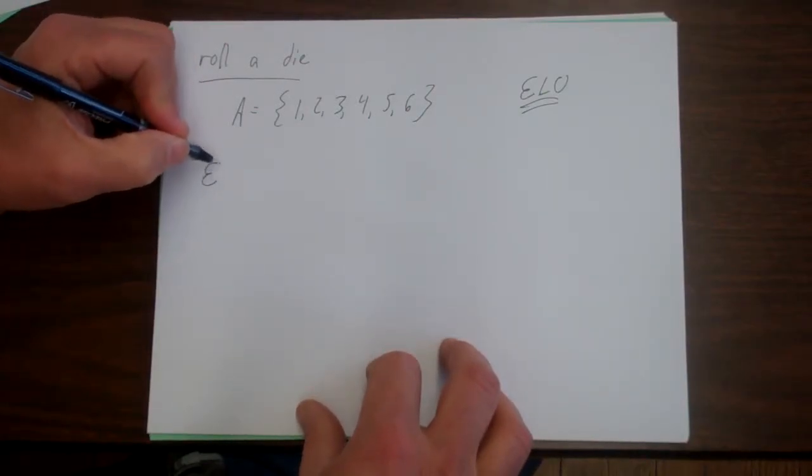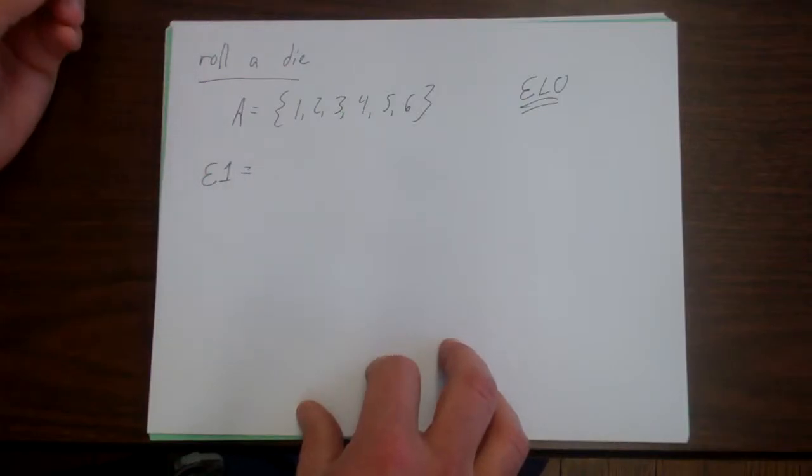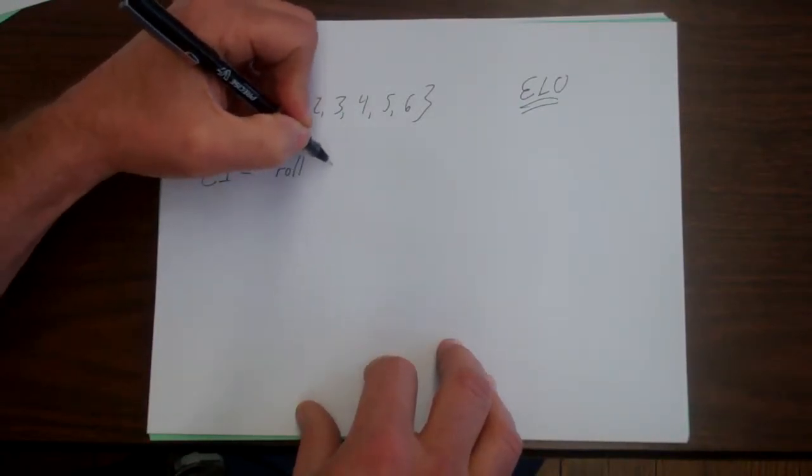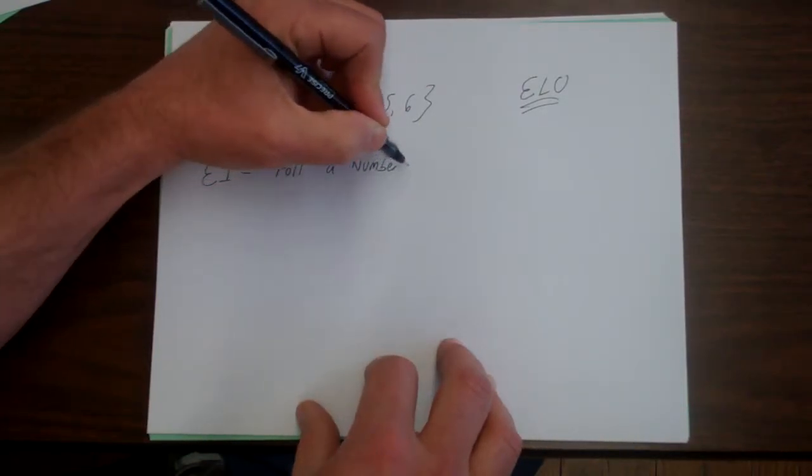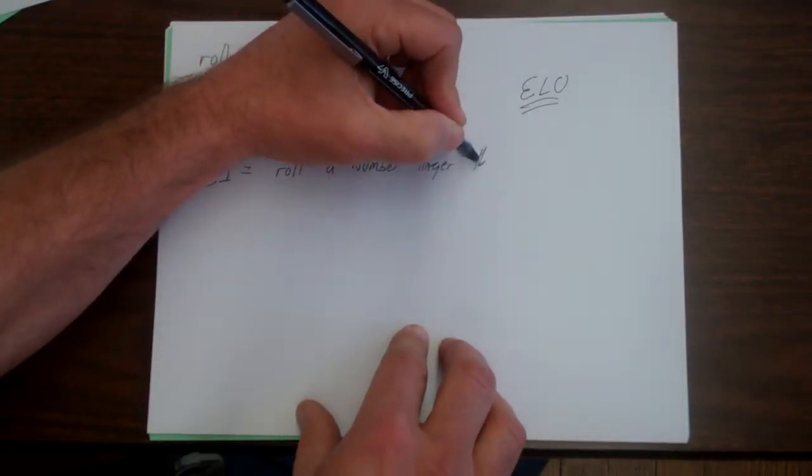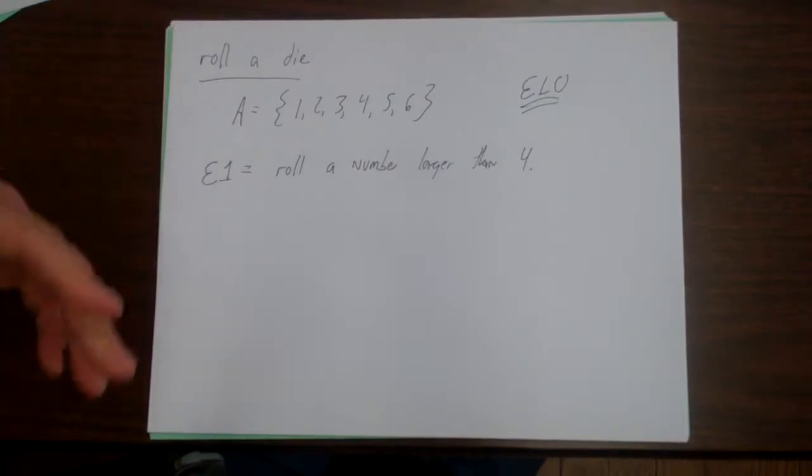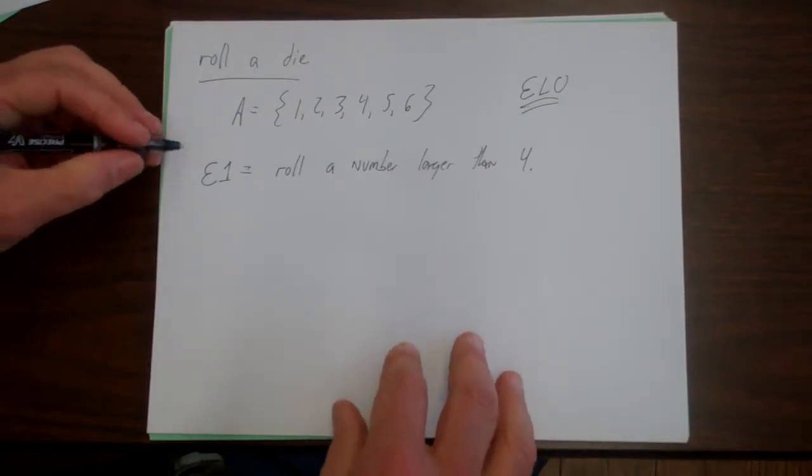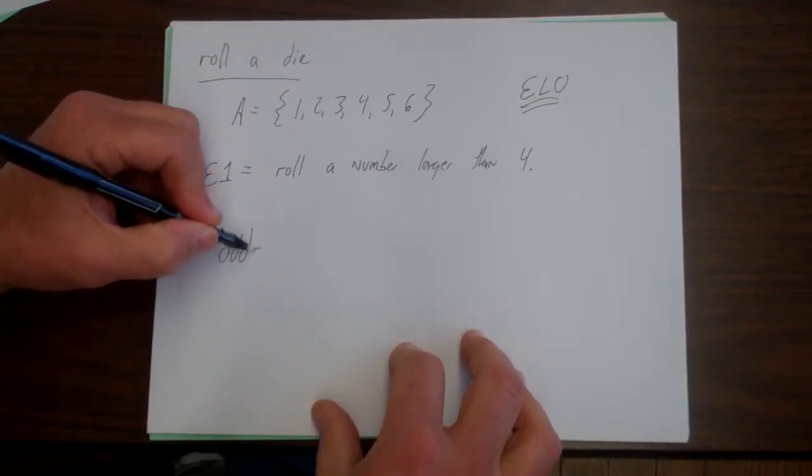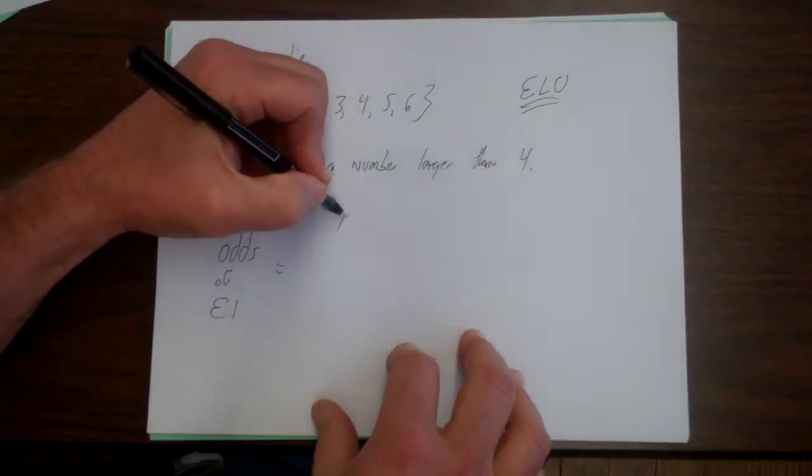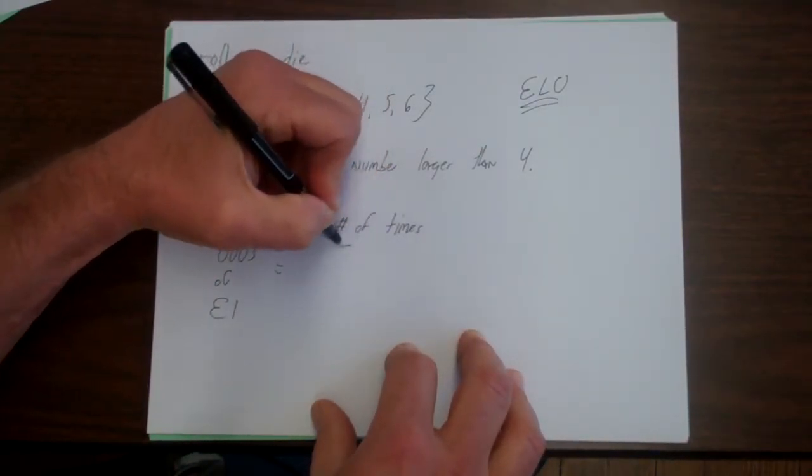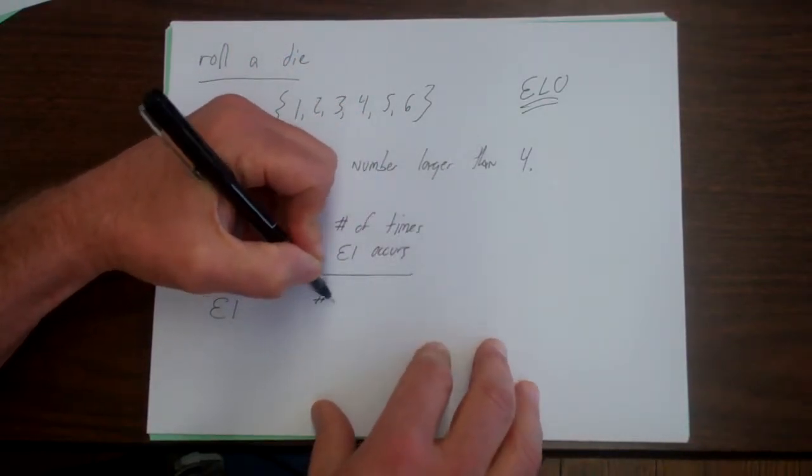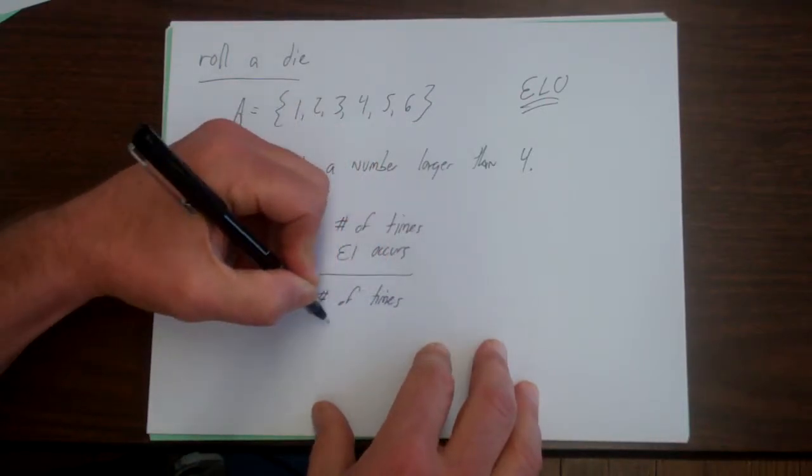So let's define an event. Let's define event number 1. Event number 1 would be to roll a number larger than 4. So you have a simple game of chance. You're betting some money, say, and you're rolling a die. And you win if you get a number bigger than 4 and you lose if you get any other number. So you're trying to figure out what your odds are. And that's the way people would talk. They said, what are the odds of winning or losing here?